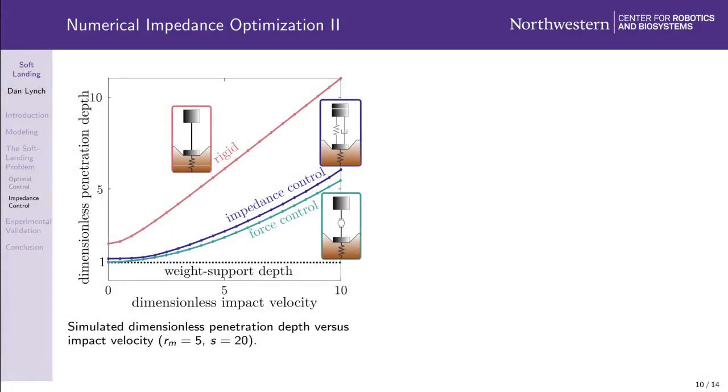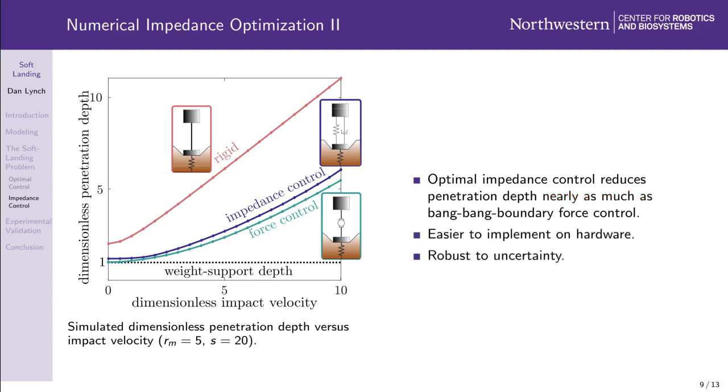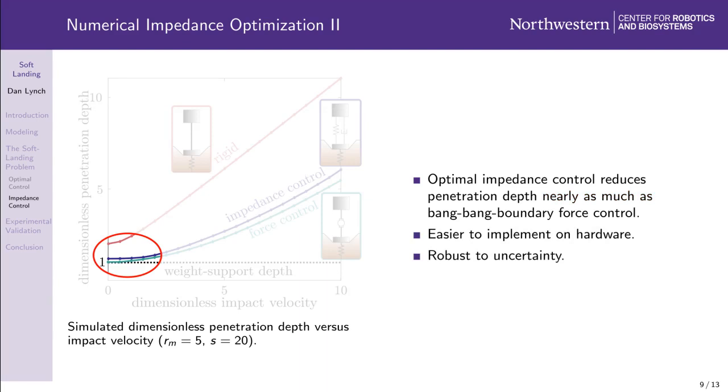Having explored the stiffness damping plane for a range of impact velocities, mass ratios, and stroke limits, we now compare optimal impedance control to the optimal open-loop force control policy derived earlier. It appears that optimal impedance control reduces foot penetration depth nearly as well as the optimal control policy suggested by Pontryagin's maximum principle, while being easier to implement on hardware and remaining robust to uncertainty. At low impact velocities, penetration depths near the minimum weight-bearing depth are achievable. At high impact velocities, penetration depth grows linearly, but more slowly than for a rigid impactor. This dependence on impact velocity suggests that impedance on real-world robots needs to account for the desired gait as well as the ground stiffness.